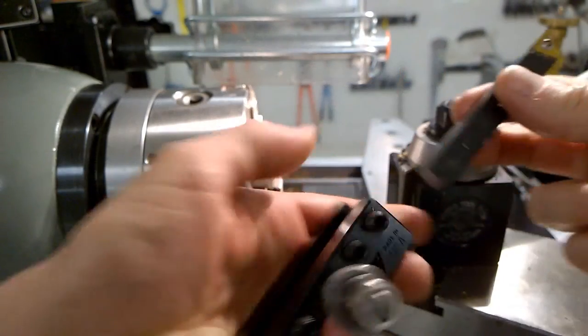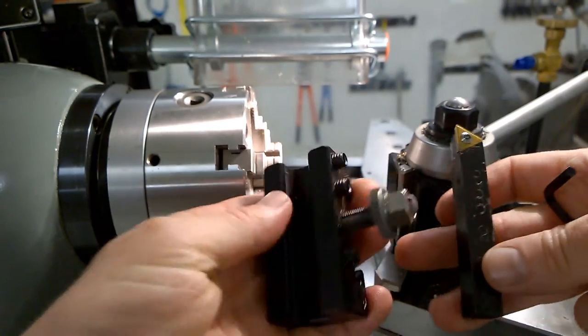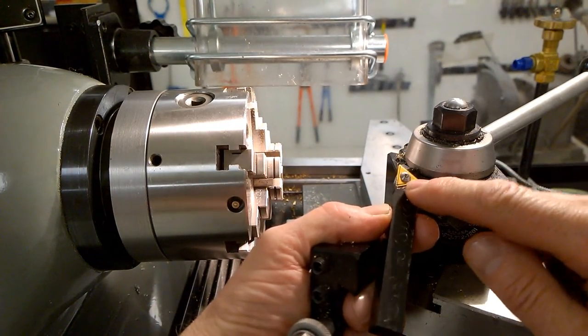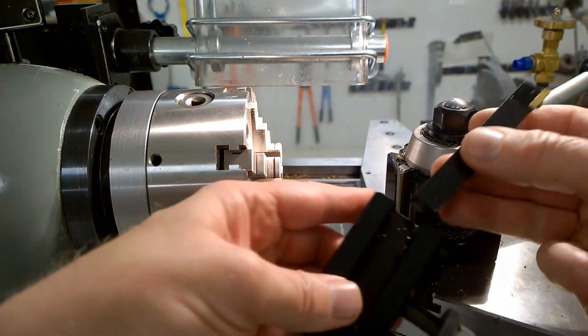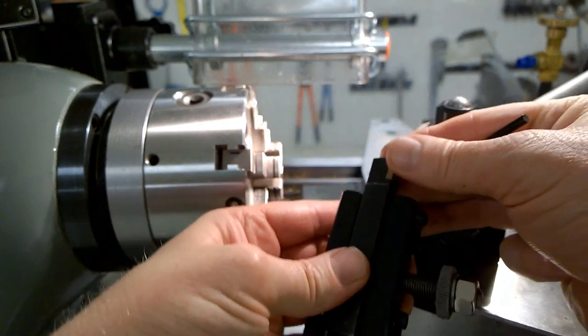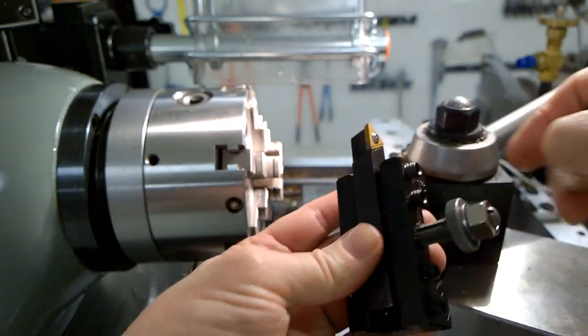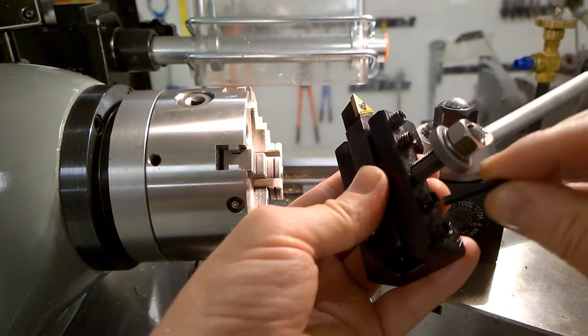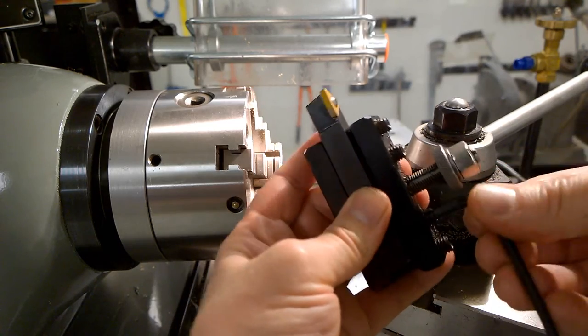I would highly recommend changing the lantern style tool post shown in the South Bend video to a modern quick change tool post with carbide inserts. As a beginner, it is much easier to replace carbide inserts when they become dull than it is to regrind tools. Make sure that the tool is firmly secured into the tool holder using the set screws.